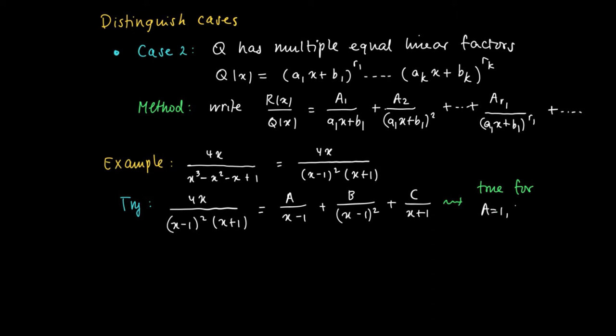Well, we won't do this here. We'll see more examples of this procedure. But doing this, we find constants A = 1, B = 2, and C = -1.